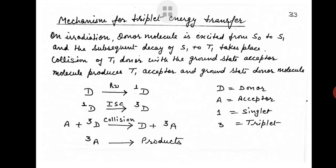Now let us study the mechanism for triplet energy transfer. Light is absorbed by donor D to produce its excited singlet state ¹D, which undergoes inter-system crossing to produce excited triplet ³D. Upon collision between ³D and ground state acceptor A, energy transfer occurs to produce excited triplet ³A plus D. If ³A gives the product, it is called photosensitization; if ³D gives the product, it is called quenching. Benzophenone and fluorescein are examples of important photosensitizers used in photochemical reactions.